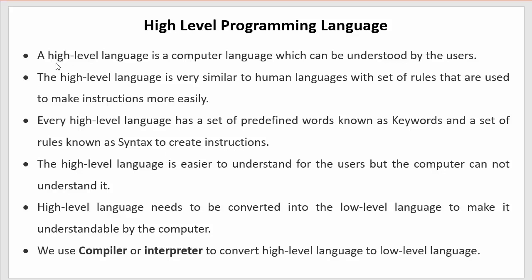So let us start our discussion with the first point. A high-level language is a computer language which can be understood by the users. This high-level programming language is another level of programming language. In my previous two videos I discussed low-level and mid-level programming language — I recommend watching those as well, you can find them in the same playlist. A high-level programming language can be used by the programmers to write programs to perform any complex task.